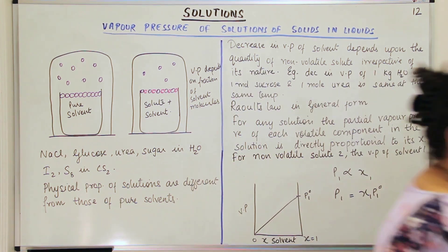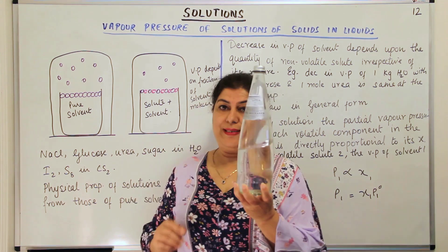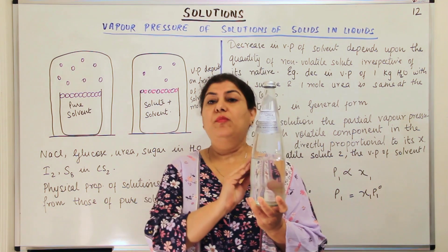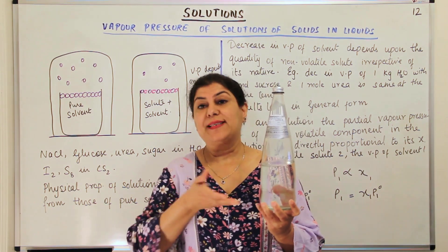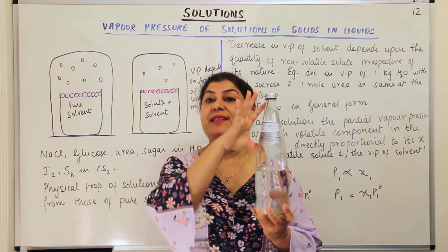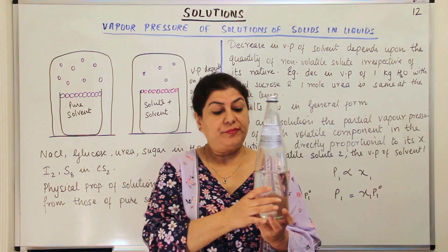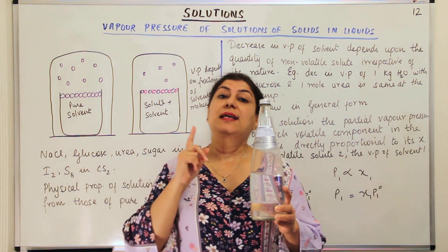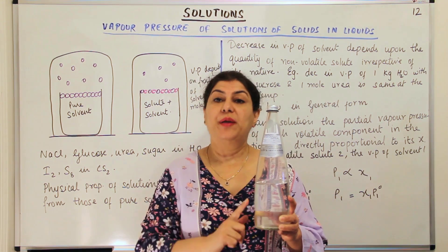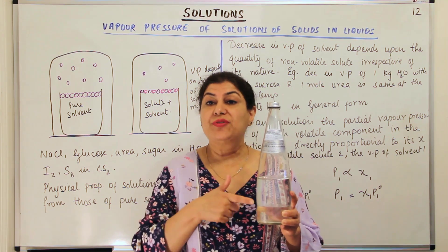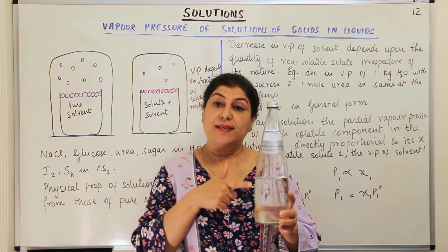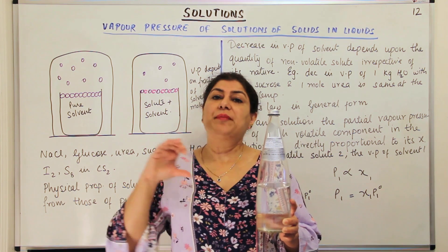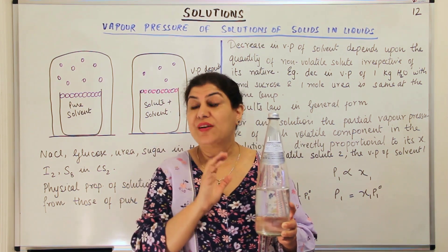For any liquid in a closed vessel, like the water in a bottle, the water will evaporate at any temperature. Some molecules of water will have more energy and they will escape in the form of water vapor, trapped inside the top of the bottle. The pressure of the vapors will go on increasing until equilibrium is established — when the number of molecules entering back into the liquid and the number escaping become constant. So for every temperature and every liquid, the vapor pressure is fixed.